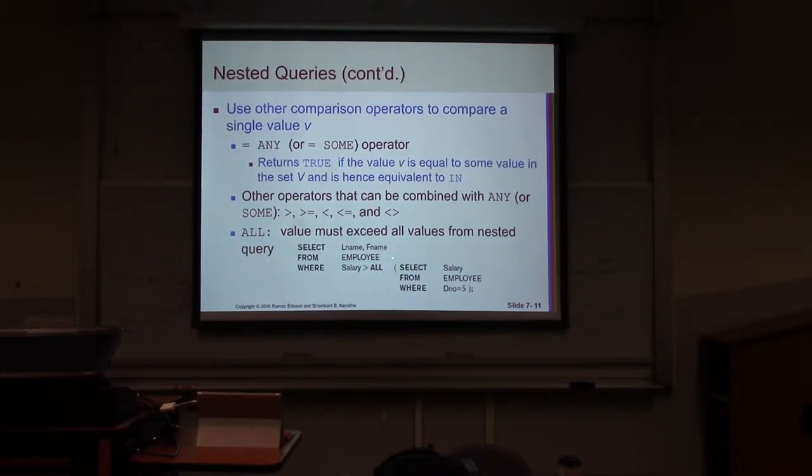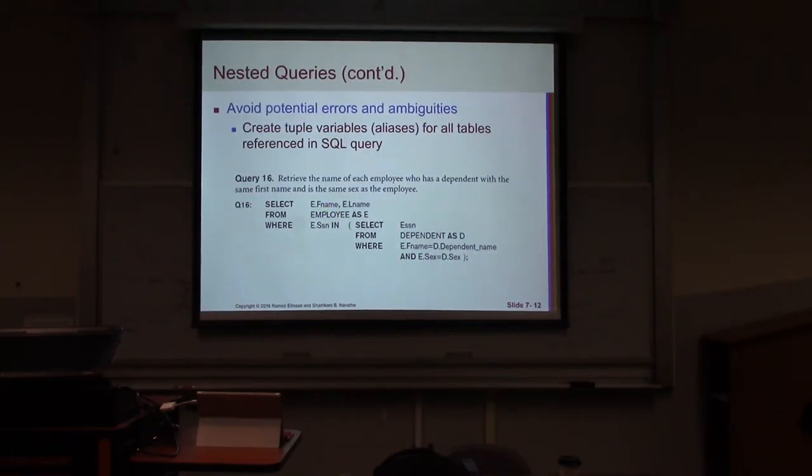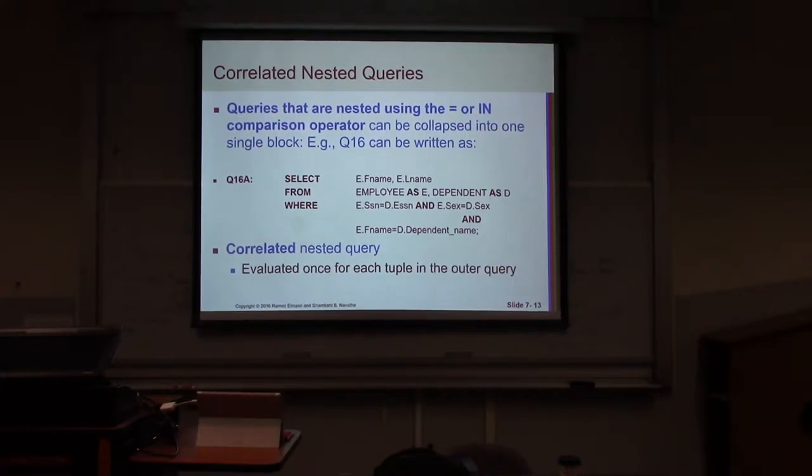Then in the next query, we can use such a thing like ALL, which means all the salary. This one returns how many salary? Same number of the employee or equal or less than. Let's say five salaries will be returned: thousand, ten thousand, twenty thousand, something like that. All this salary, the employee whose salary is bigger than any of these, will be returned. At that time, you can use the ALL operation. And IN is the same thing. However, such a nested query can be combined into one query using the join condition. In this case, we can just use the join. That's the thing.